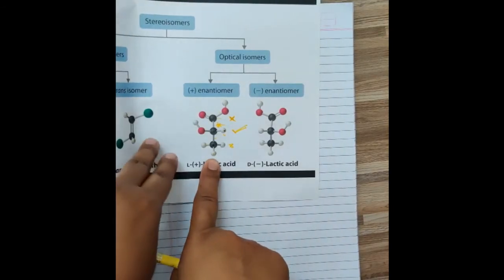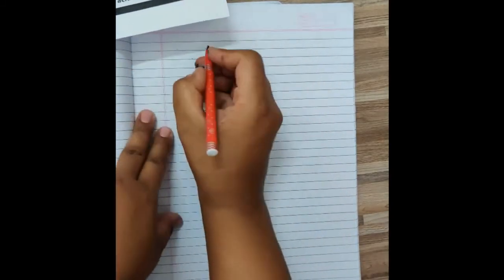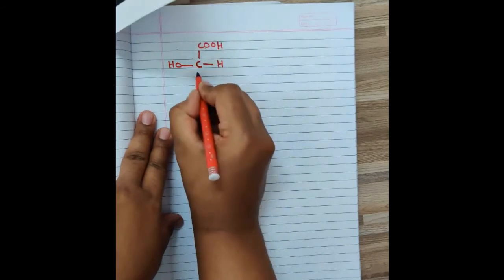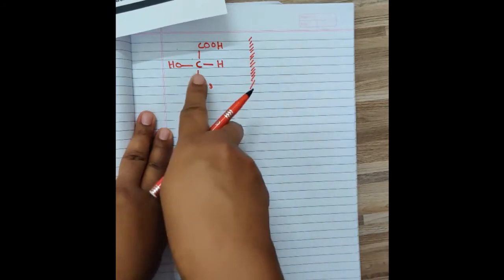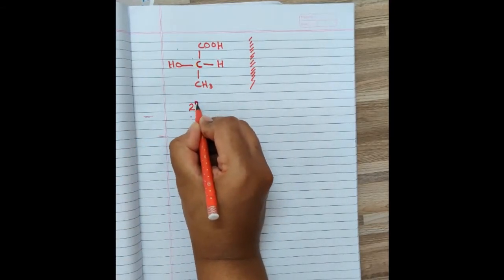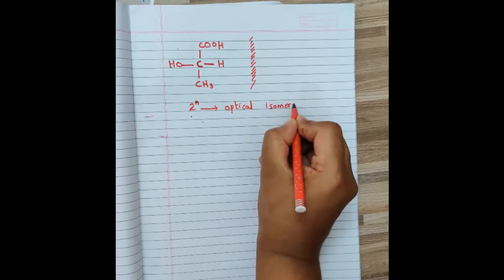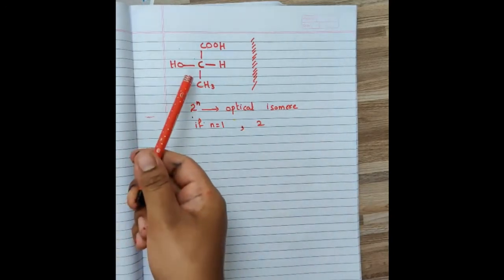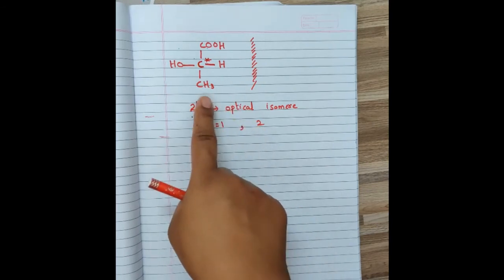This three-dimensional structure of lactic acid can also be represented using Fischer projection formula, shown as CHOH with COOH and CH₃. Lactic acid contains only one chiral carbon. Using the formula 2^N, where N is the number of chiral carbons, with N equals 1 we get 2^1 equals 2 optical isomers for lactic acid.